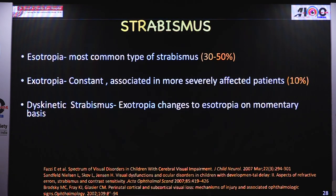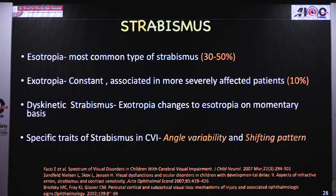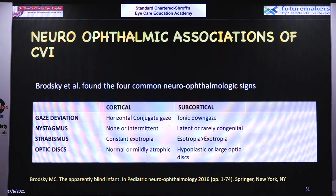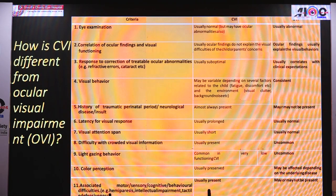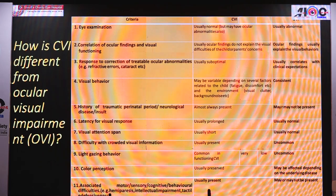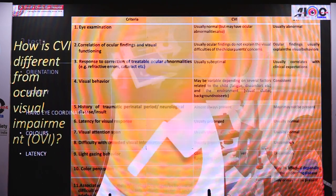For strabismus, esotropia is the most common type noted, but the characteristic pattern is dyskinetic strabismus which changes on a momentary basis — angle variability and shifting pattern. Neuro-ophthalmologically, children born less than 28 weeks have smaller discs with nerve hypoplasia; after 28 weeks they have pseudo-glaucomatous discs. With subcortical lesions children prefer tonic downgaze, nystagmus may or may not be present, and esotropia and large discs are most common. In OVI, colour and acuity are affected, whereas in CVI visual acuity could be normal but prolonged latency, poor attention span, difficulty with crowded scenes, light gazing, and preserved colour are characteristic.